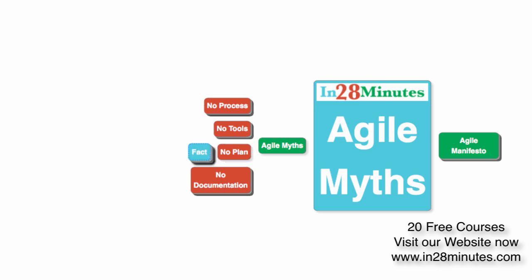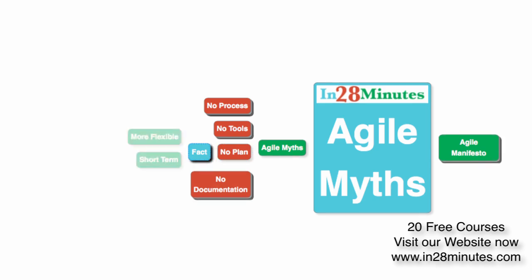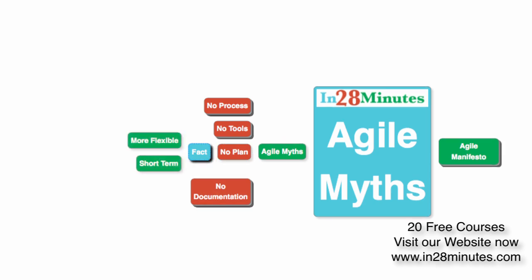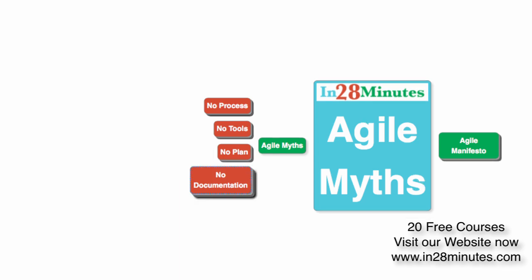Myth three: no plan. That's really not true. The real fact in Agile is that you create more flexible plans. You don't create a detailed one-year plan, but you do create a small high-level plan of what features you want. The plans are more short-term — probably a plan for the next two months or the next couple of sprints — and these plans are more flexible.